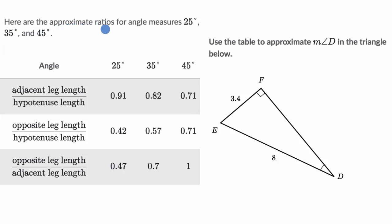Here are the approximate ratios for angle measures 25°, 35°, and 45°. For example, if you take the adjacent leg length over the hypotenuse length for a 25° angle, it would be approximately 0.91. For a 35° angle, it would be 0.82, and they provide similar ratios for 45°. We're going to use the table to approximate the measure of angle